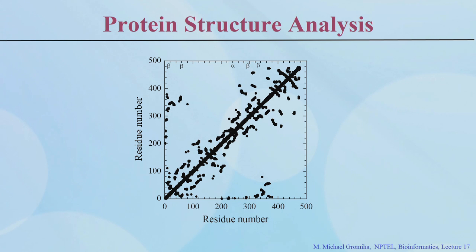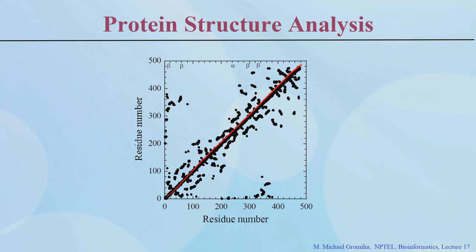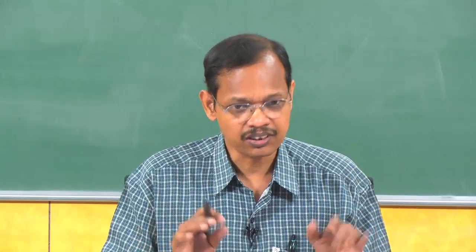From a contact map you can infer that the diagonal is always filled because neighboring residues are always in van der Waals contact - residues 1 and 2, 1 and 3 are always close. Off-diagonal entries represent residues that are close in 3D space but far apart in sequence. For example, a contact between residue 10 and residue 300 indicates a long-range contact.